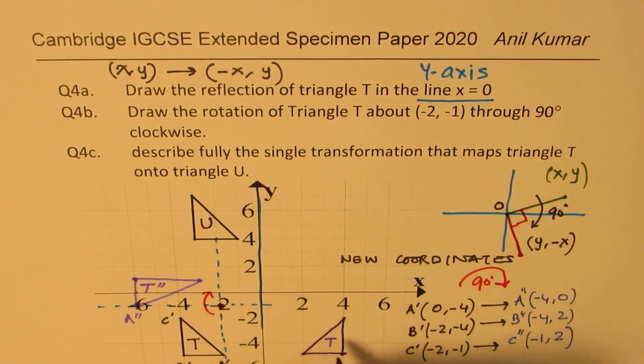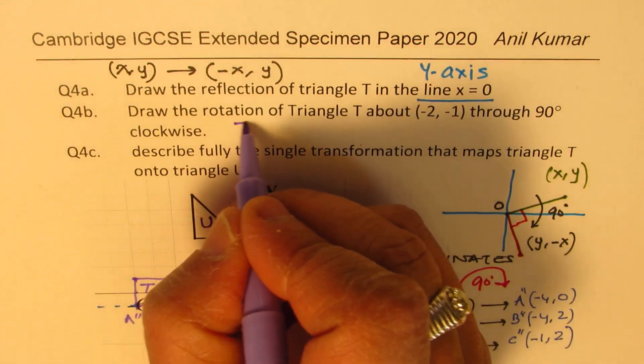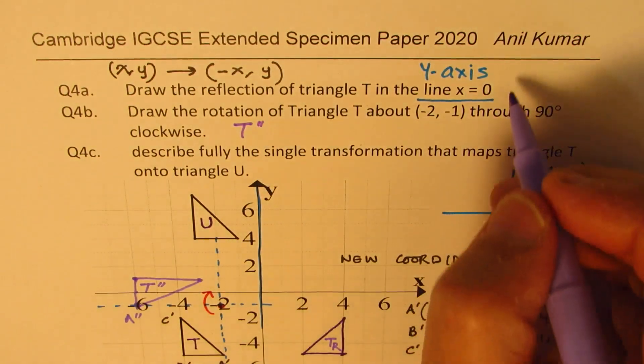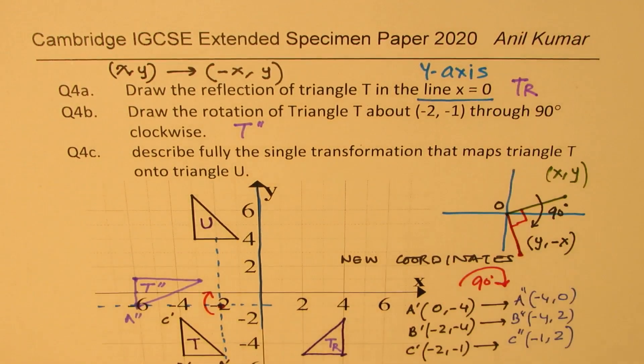That is our triangle T reflection R. Let's call it R since I use dash here. So that is our answer. Clockwise rotation is our triangle T double dash, and this reflection is our TR.